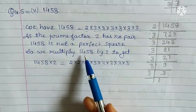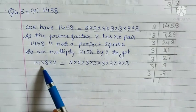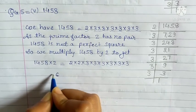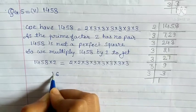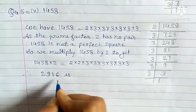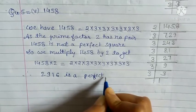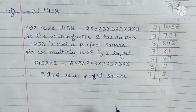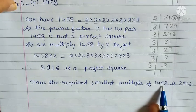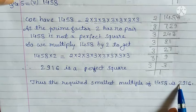So we multiply 1458 by 2. We had 1458, and when we multiply by 2, we get: 2 × 8 = 16, carry 1; 2 × 5 = 10, plus 1 = 11, carry 1; 2 × 4 = 8, plus 1 = 9; 2 × 1 = 2. So this number is 2916. Therefore, 2916 is a perfect square.